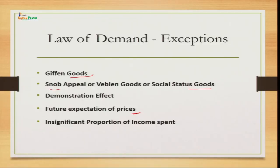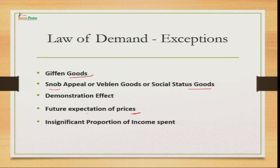Next is future expectation of prices. Law of demand says that when the price of a commodity is increasing, demand will decrease. But what if the price is already high, yet the future expectation is that prices will go even higher? Take the example of gold — the price is already high, but people expect further increases in the future. So they increase their demand even at a higher current price, expecting prices will go further up. Here also, law of demand does not work.